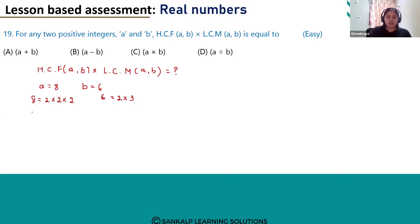So if we take the HCF, that is HCF of 8 and 6, we can get 2.